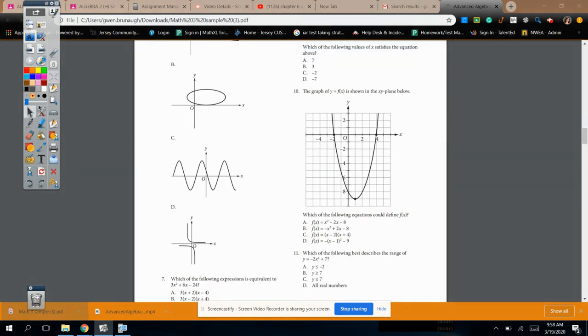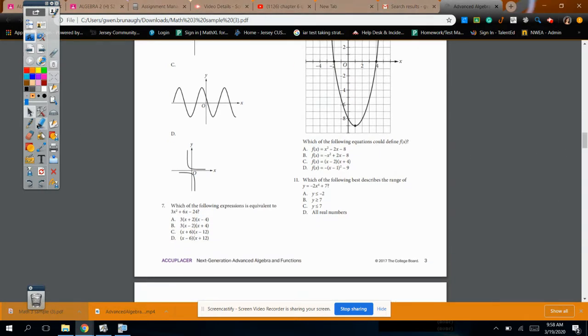Which of the following expressions is equivalent to this guy? So this is one where you would work with the choices. Hopefully, when you notice that the 3 is in front of the x squared, you would quickly eliminate choices c and d. So then it just becomes a matter of checking these two. The middle term is what's going to be an issue here, and if it's me personally, I like to look at that and then distribute the 3 last.